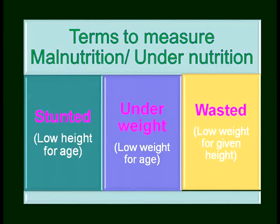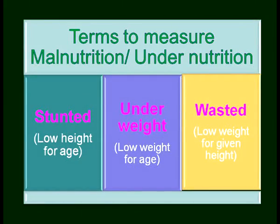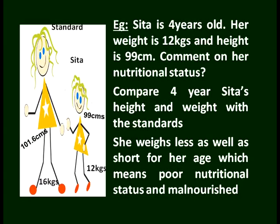There are few terms used to measure malnutrition or undernutrition at the national stage. We use three terms: stunted, underweight, and wasted. Stunted means low height for age. Underweight means low weight for age. Wasted means low weight for the given height. Here we have an example — Sita is four years old and her weight is 12 kg — you compare this child with others to learn whether she is malnourished, healthy, normal, or overnourished.